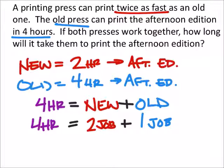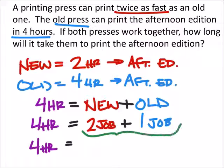So here's what we have. In four hours, working together, if they were working together, which it said they were, I'd have two jobs and one job total, meaning I would have three total editions, afternoon editions, three jobs. Now, I made jobs the afternoon edition just because I didn't want to write afternoon edition that many times. So pardon my laziness.